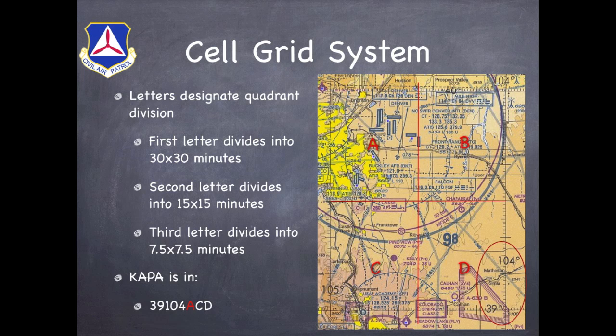So for example, we're going to start looking again for Centennial Airport, which is going to be at 39104 Alpha. We further divide that quadrant into four sections — again A, B, C, and D — and these are now 15-minute by 15-minute sections. Following to Centennial, we're now in 39104 Alpha Charlie. And because we use a standard 7.5 by 7.5-minute grid as our search area, we're actually going to divide that last one into four more quadrants — again A, B, C, and D. So in this case, Centennial Airport is going to be in 39104 Alpha Charlie Delta.